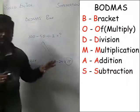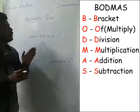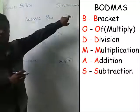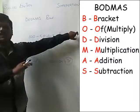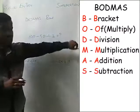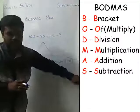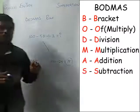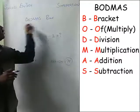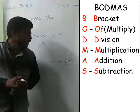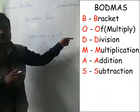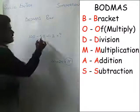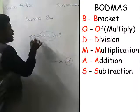Whatever the expression is, however long it is, you have to calculate in this order: bracket first, then Of (which is useful multiplication), then Division, Multiplication, Addition, and Subtraction. This is the order of operations. All calculators and computers follow the BODMAS rule. Since division comes before subtraction, you have to do the division first and then the subtraction.